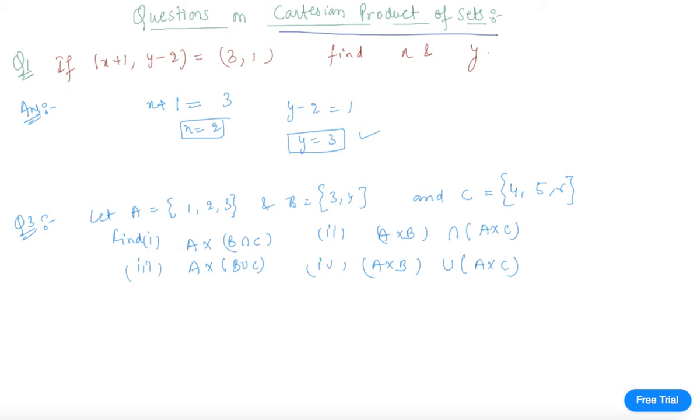To solve this question, we will proceed step by step. The first part asks for A × (B ∩ C). First we write {1, 2, 3} cross - what is B ∩ C students? It is only {4}. So this is a 3 × 1 set.